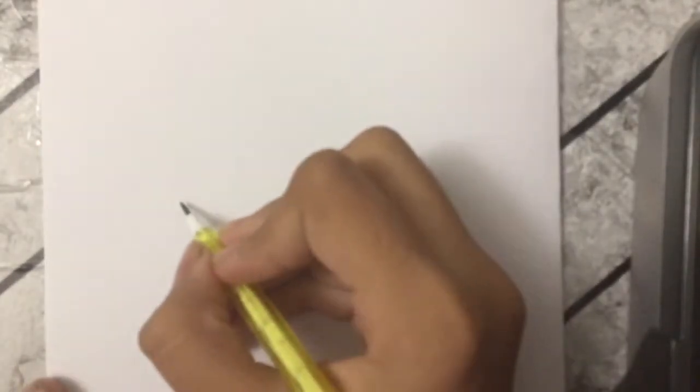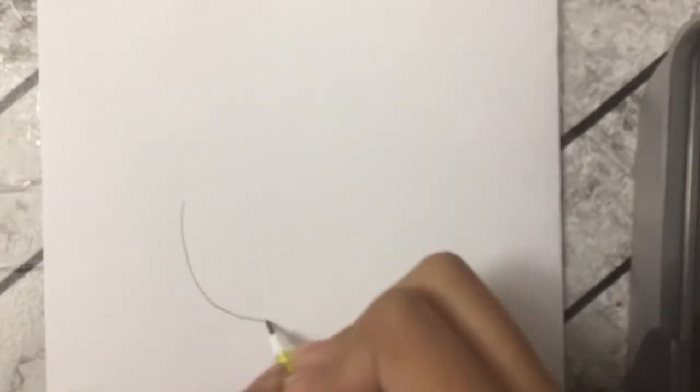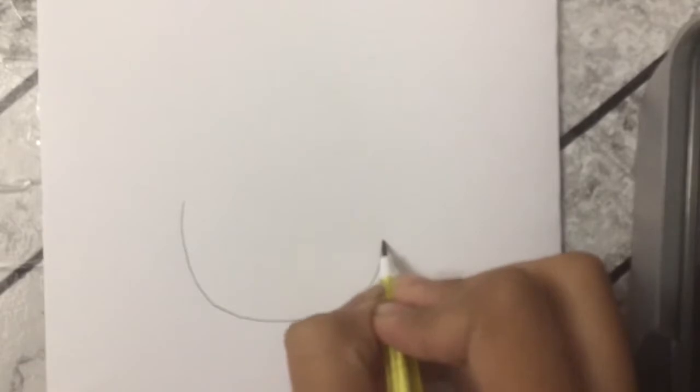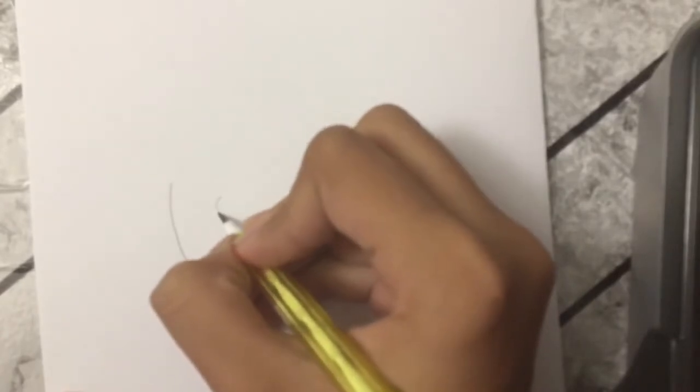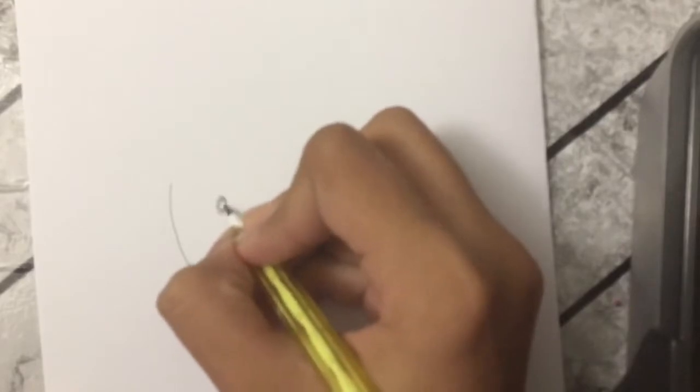Hey guys, today we're gonna be drawing a cute and easy Percy Jackson, so let's get started. First for his face we're gonna draw a curve like this, and then I'm gonna go into his eyes. Since it's an easy tutorial, we're just gonna draw two circles and color them in like this.